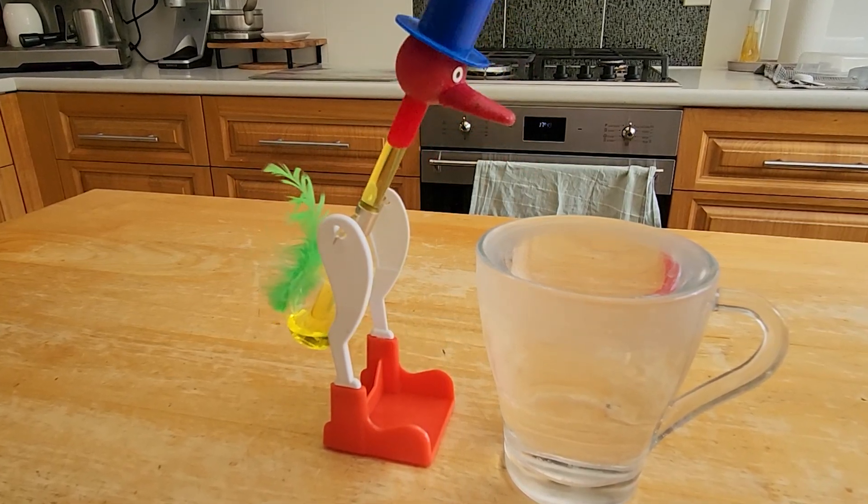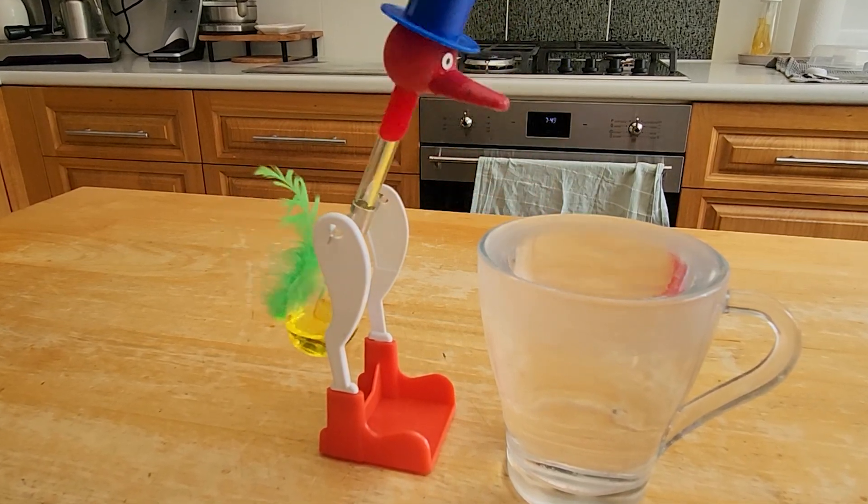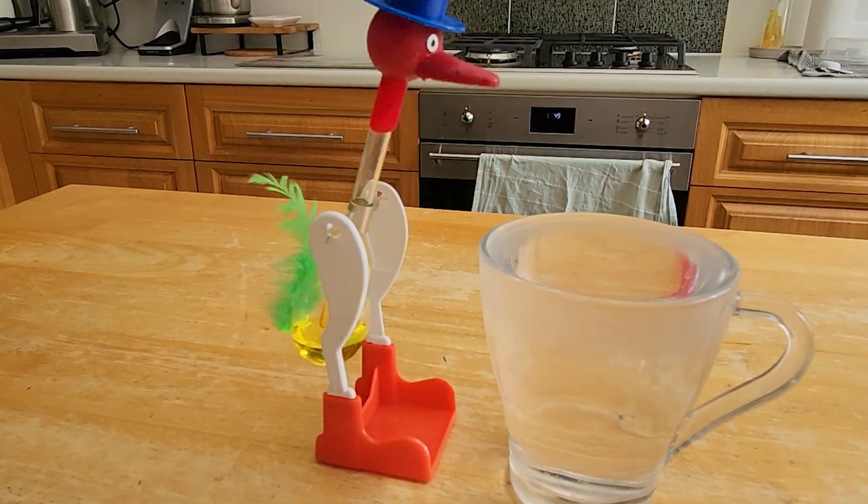The liquid then flows back down into the bottom bulb, making the center of gravity lower. And Mr. Dippy resumes his upright position and the whole process begins all over again.